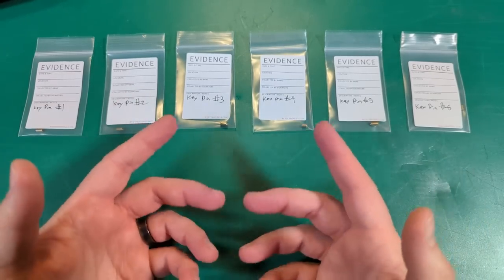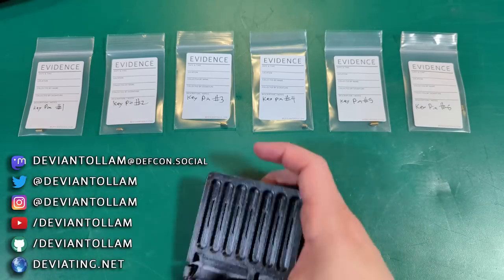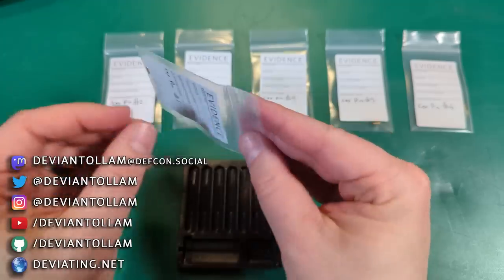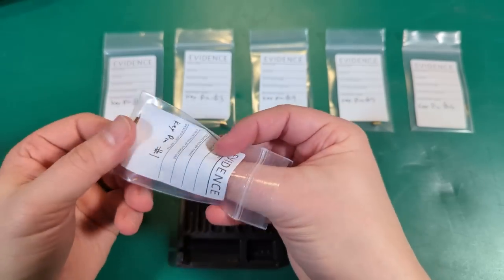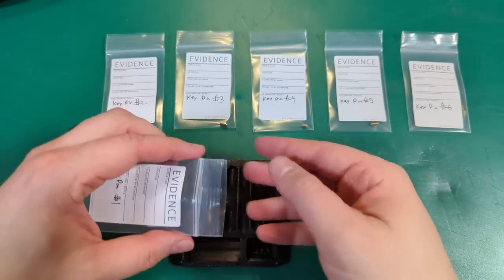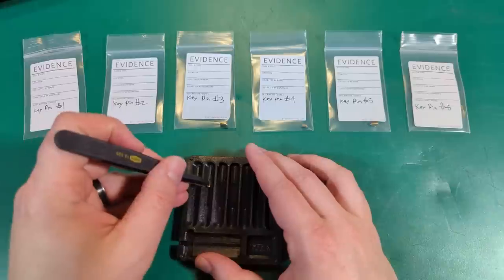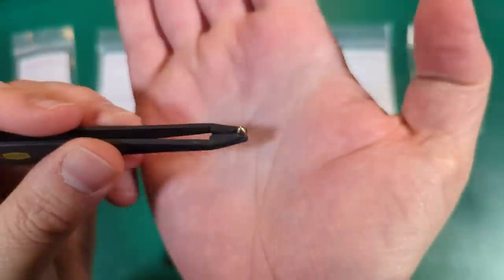Hey, everyone. Continuation of the previous video where we talked about a forensic lock disassembly and examination. Let's go ahead and actually take a look at some of these pins. Maybe we'll find tool marks, maybe evidence of aliens or something. But in general, this is the process for checking out what's going on.